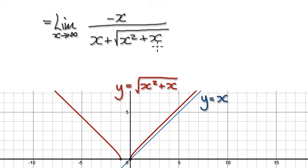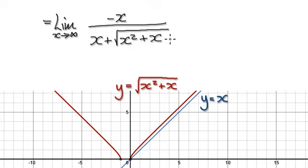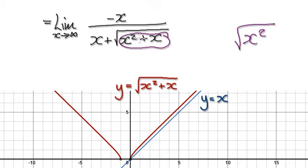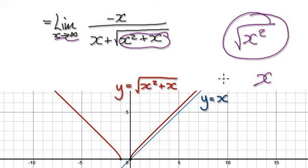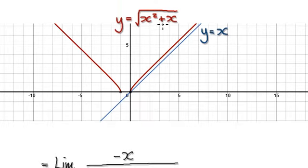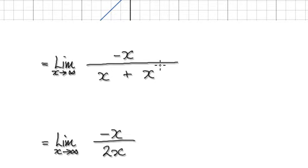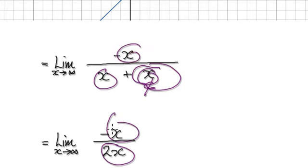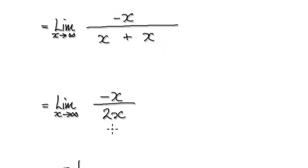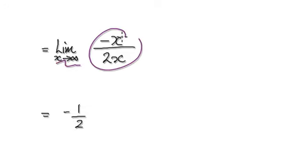So what I'm trying to say is that as x tends to infinity, this thing here will be insignificant in comparison to x squared. So as x tends to infinity, you can imagine this whole thing here as being x squared, and then you've got your square root. As x tends to infinity, this whole thing here will tend towards x. So this really becomes x. So now you've got x plus x, that's 2x here. And then divide the top and bottom by x as well. As x tends to infinity, this thing here becomes negative one half.